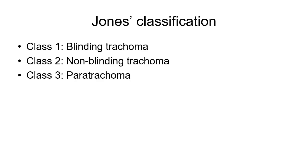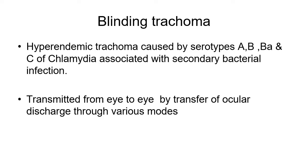According to John's classification, Class 1 is blinding trachoma, Class 2 is non-blinding trachoma, and Class 3 is paratrachoma. Hyperendemic trachoma is caused by serotypes A, B, Ba, and C of chlamydia, associated with secondary bacterial infection. It is transmitted from eye to eye by transfer of ocular discharge through various modes.